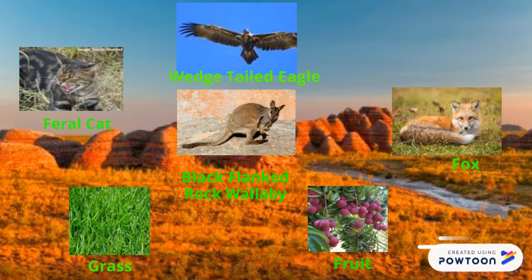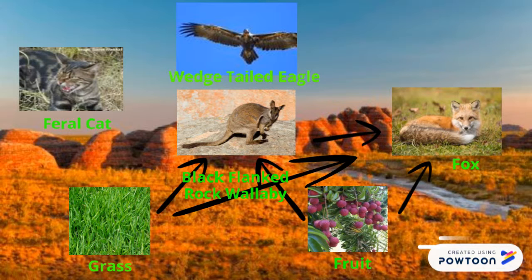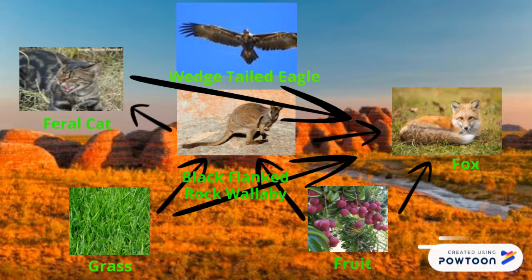The fruit is eaten by the Black Flanked Rock Wallaby. Grass is eaten by the Black Flanked Rock Wallaby. Grass is eaten by fox. Fruit is eaten by fox. Black Flanked Rock Wallaby is eaten by fox. Black Flanked Rock Wallaby is eaten by feral cat. Fox is eaten by feral cat. Black Flanked Rock Wallaby is eaten by Wedge-tailed Eagle. A fox is eaten by a Wedge-tailed Eagle. A feral cat is eaten by a Wedge-tailed Eagle.